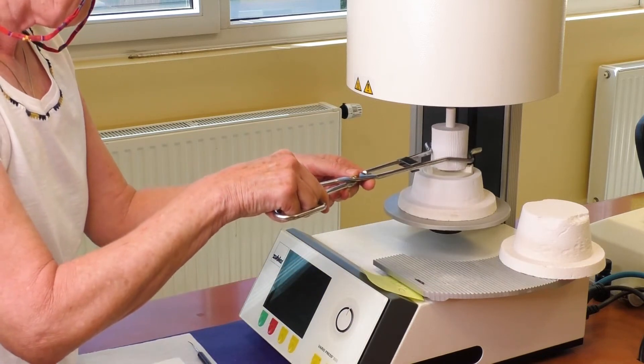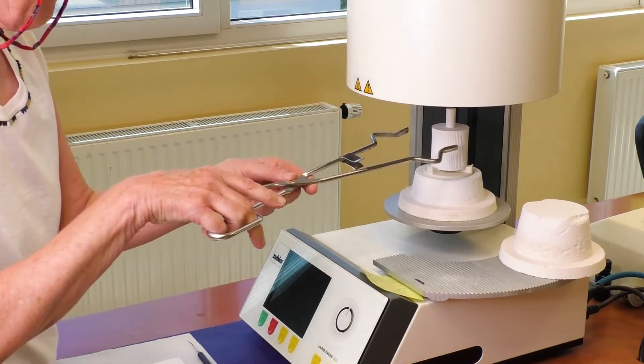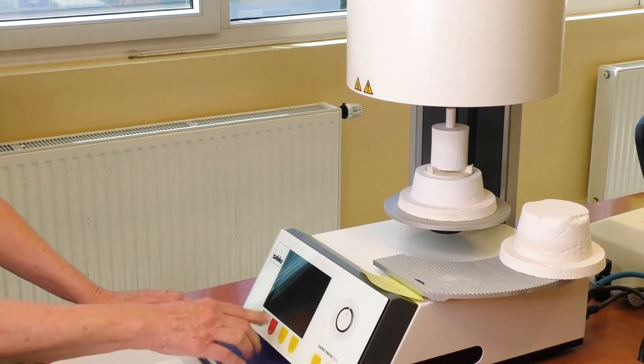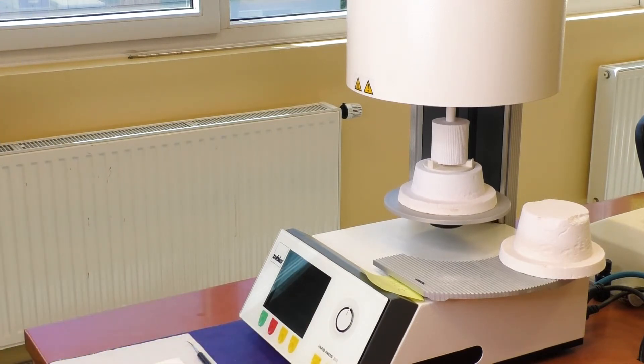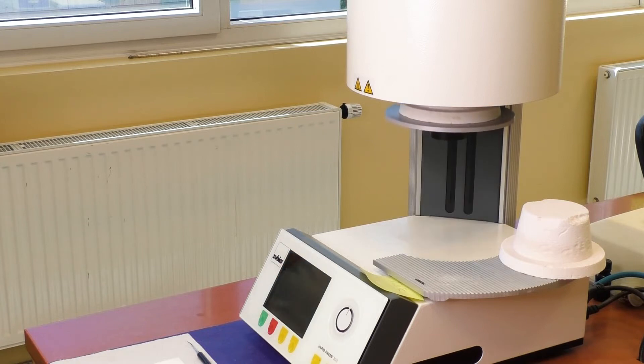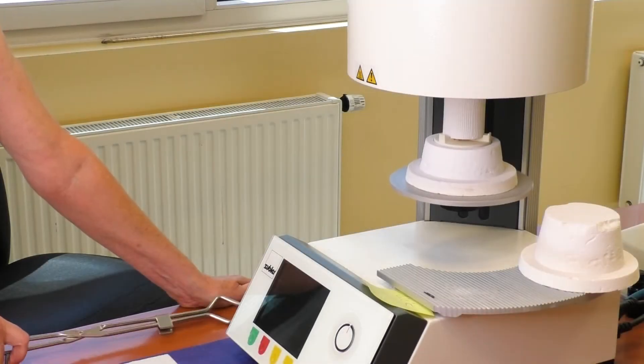If the pressing temperature is too low, the object is not completely pressed. If the pressing temperature is too high, you get a strong reaction layer. Raise or lower the temperature in steps of 5 degrees Celsius.